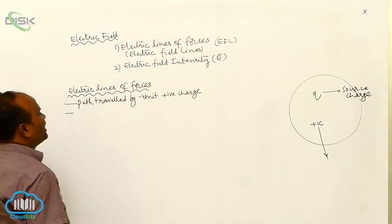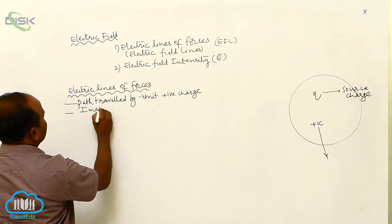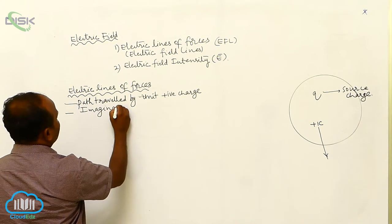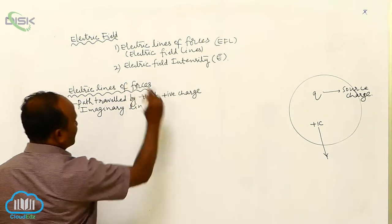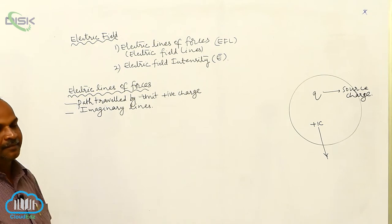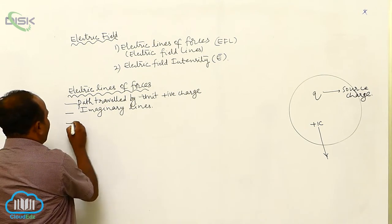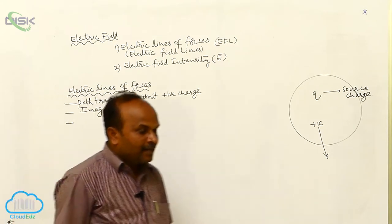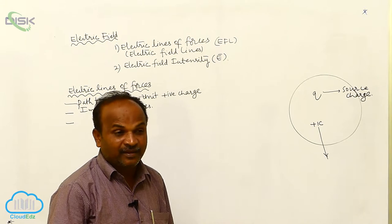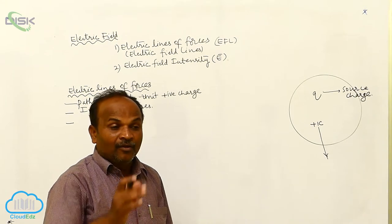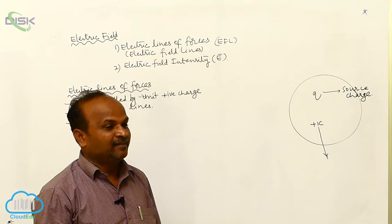These electric lines of forces are called imaginary lines. These electric lines of forces always travel from the surface of the positive charge to the surface of the negative charge.